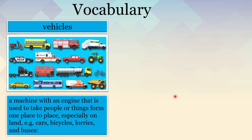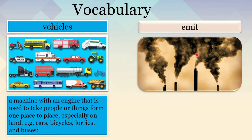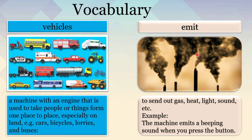Now, moving on to our next word. What can you see here? You can see that the chimneys are sending out smoke. You can see that the chimneys are emitting smoke. Emit means to send out gas, heat, light, sound, etc. For example, the machine emits a beeping sound when you press the button.